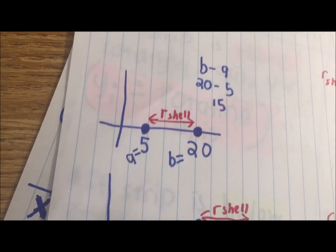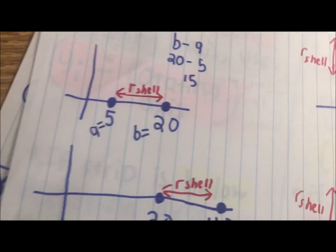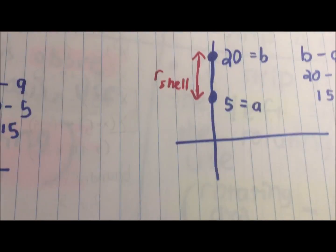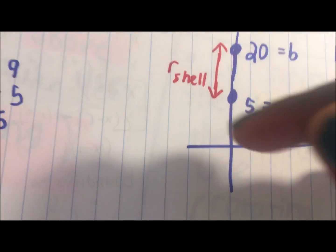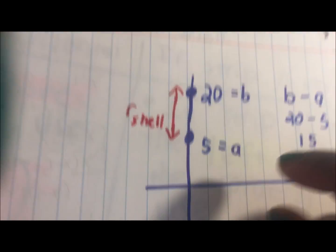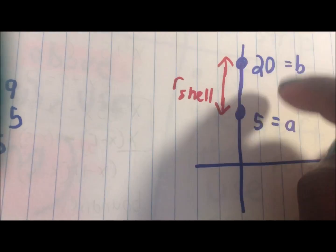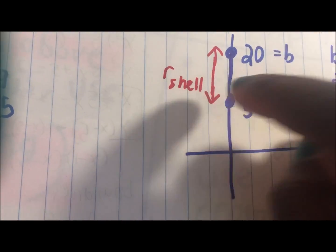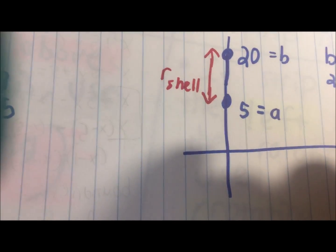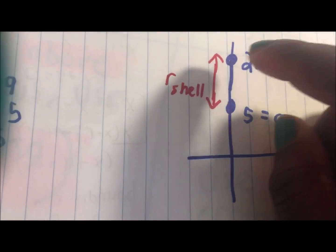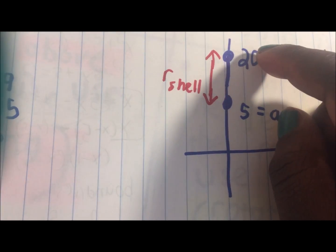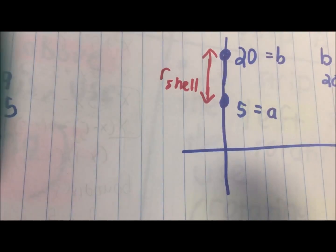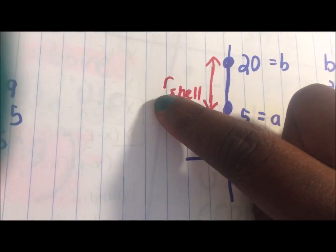Let's try an example when it's on the y-axis. Find the distance between these two points — that would be r_shell. You would say the distance between these two points is 20 minus 5, which is 15. So r_shell is 15. In order to do that, you did b minus a: 20 minus 5, that's 15.